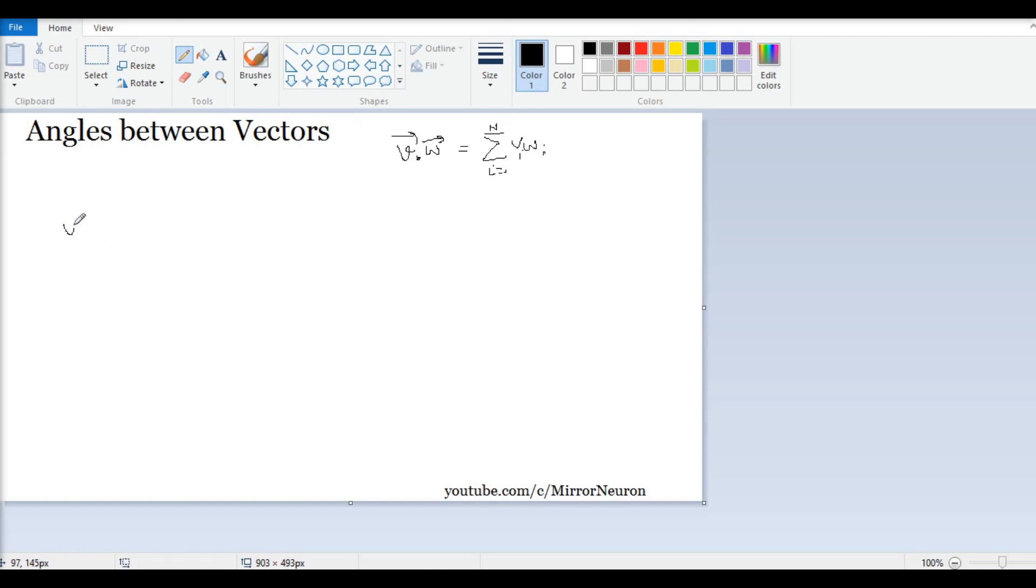Remember the example that we took where V was equal to V1 comma 0, and then we had W as W1 W2. If I try to plot the vector V on my x-axis and y-axis, because it has two values. V1 is up till here and it is 0 on the other side. So that means the vector V is lying along the x-axis. This is V1 comma 0, and W1 W2 probably could be lying somewhere here. This is W1 comma W2.